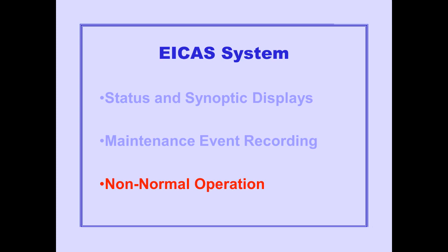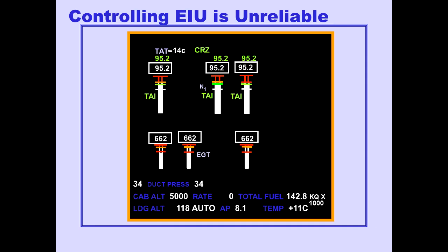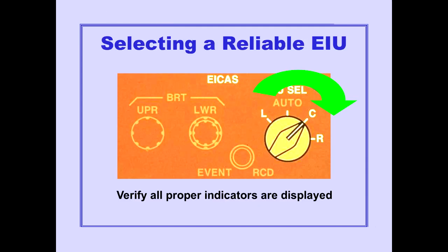Now let's look at ICAST non-normal operation. If any vertical or digital indicator is not displayed, the controlling ICAST interface unit is unreliable. This will occur only if the automatic EIU switching function has failed. A reliable EIU is selected by rotating the EIU selector to left, center, or right, and verifying that the proper vertical and digital indicators are displayed.